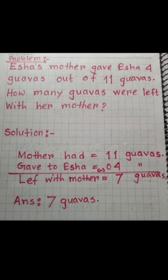Mother had 11 guavas. She gave four guavas to Issa. So we do 11 minus four. If you do counting and minus, you will get the answer. So 11 take away four.